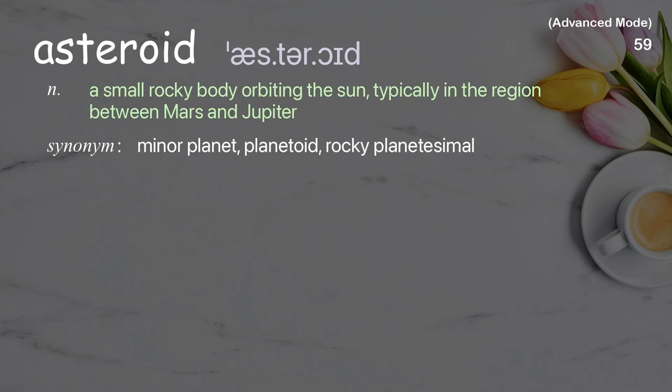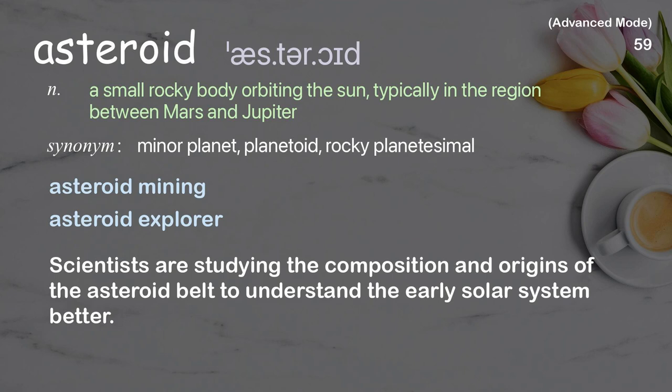Asteroid: A small rocky body orbiting the Sun, typically in the region between Mars and Jupiter. Examples: Asteroid mining, Asteroid explorer. Scientists are studying the composition and origins of the asteroid belt to understand the early solar system better.